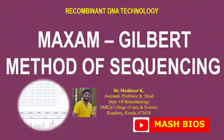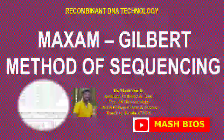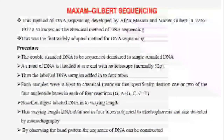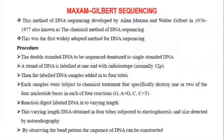First we consider the Maxim-Gilbert model of DNA sequencing. This method was developed by A.M. Maxim and Walter Gilbert in 1976, and is also known as the chemical method of DNA sequencing.